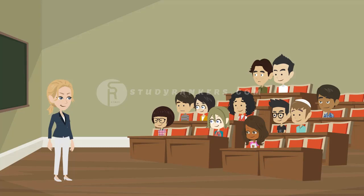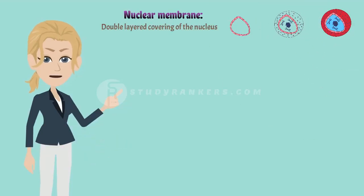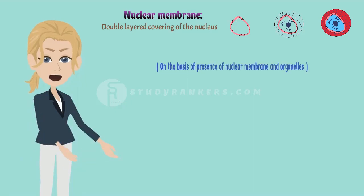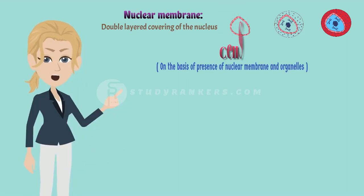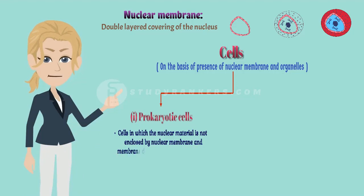Ma'am, nuclear membrane is also an important part of the cell. Yes, Anand. Nuclear membrane is the double-layered covering of the nucleus. On the basis of presence of nuclear membrane and organelles, cells are of two types. They are prokaryotic cells. Cells in which the nuclear material is not enclosed by nuclear membrane and membrane-bound cell organelles are absent. The organism possessing these kind of cells is known as prokaryotes.